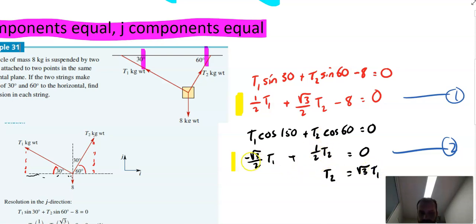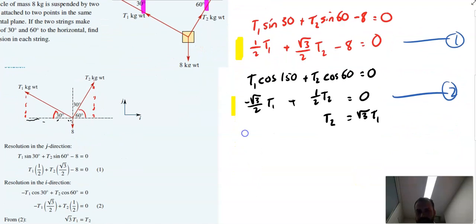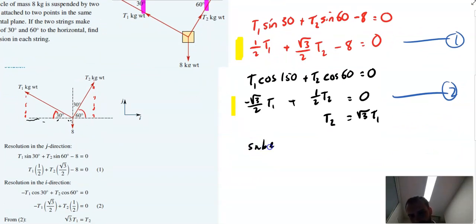Multiplying that by two, I get that. If I move that over that side and multiply it by two, I get that. Now I can sub equation two into equation one. So I'm just going to sub root three T1 in for T2. So now I get half T1 plus root three on two times root three T1 minus eight equals zero.